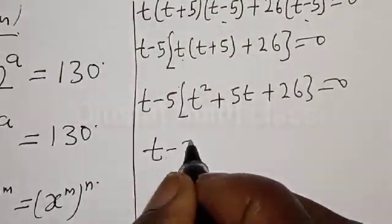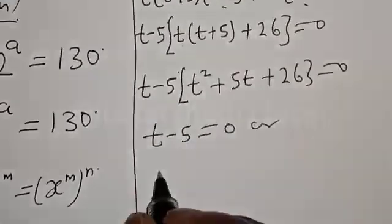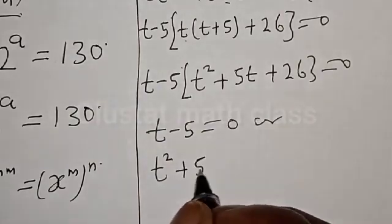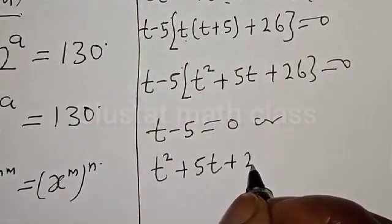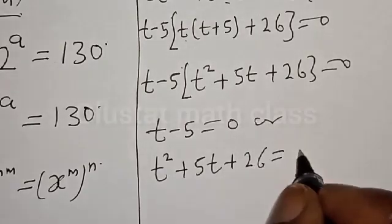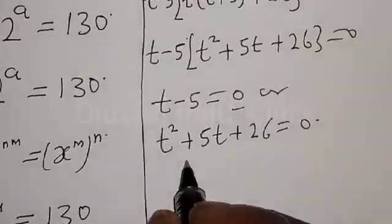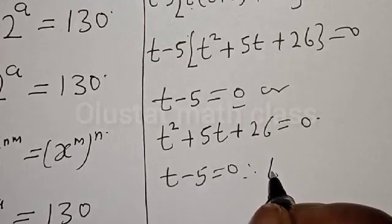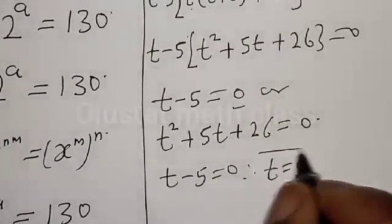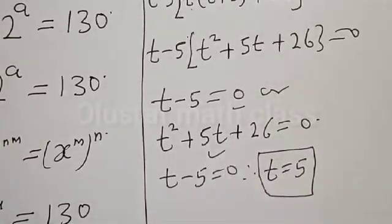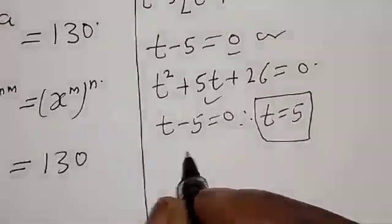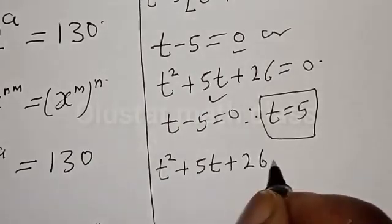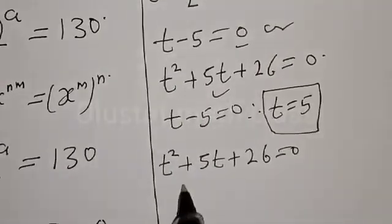So t minus 5 equals 0, or t squared plus 5t plus 26 equals 0. From t minus 5 equals 0, therefore t equals 5 — that is one value of t. Now t squared plus 5t plus 26 is a quadratic equation. Let's solve it using the quadratic general formula.